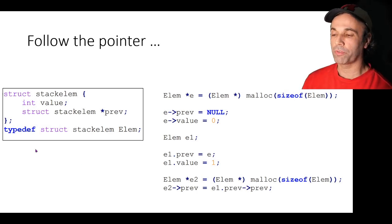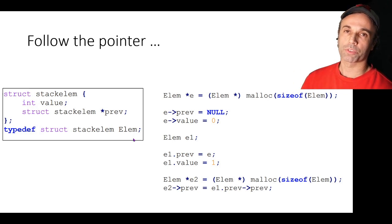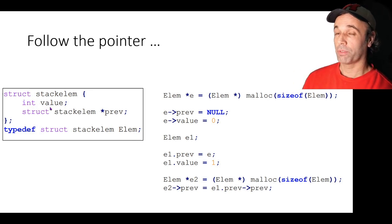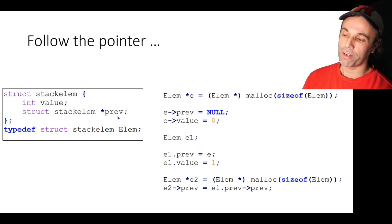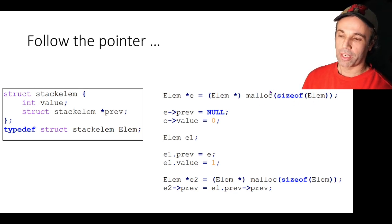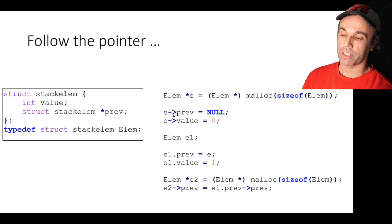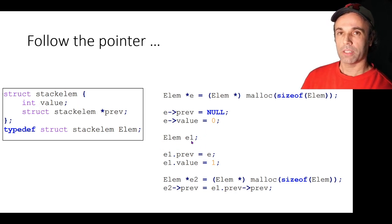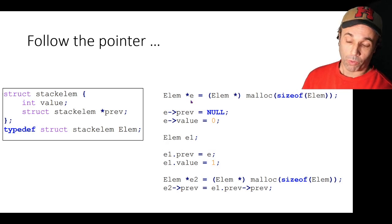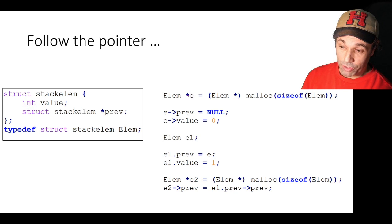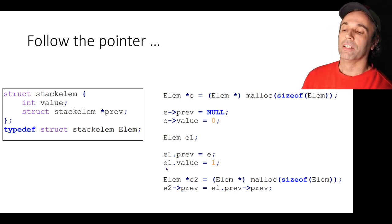Now we'll focus on the LM data structure, which relates to the rectangles in the earlier visualization. The hidden thing we didn't see in that visualization is that they also have a prev pointer which points to another LM data structure. We allocate memory for a new LM and assign that memory location to E. We then access the fields within this struct via the pointer using arrow notation, set the prev pointer to null, and set the integer value to zero. We then declare another LM, E1 — this time it's on the stack because we haven't used malloc. Because we have the value not the pointer, we access it using dot notation, and we initialize E1's prev pointer to the memory location of E.